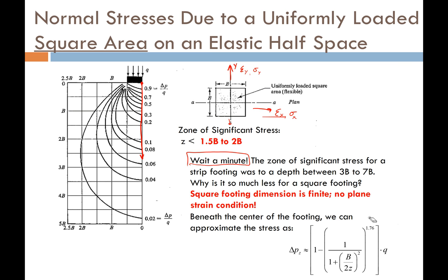If we're interested in just a point directly beneath the center of our square load and not worried about points outside the footprint, then we can use the approximation equation from Poulos, which is really convenient and handy. Remember, this is just for beneath the center of the square footing.